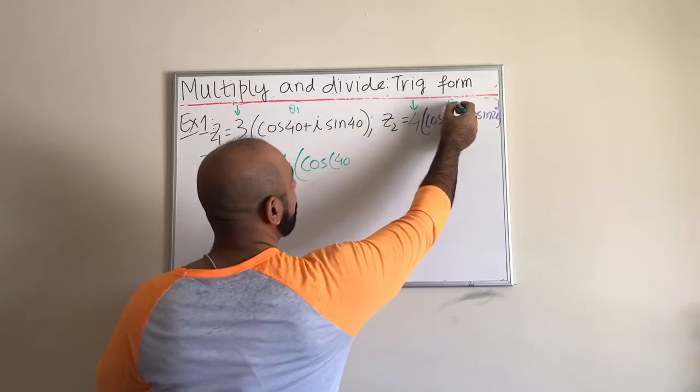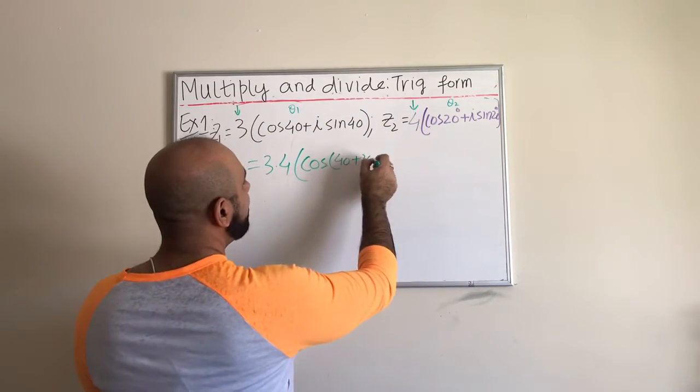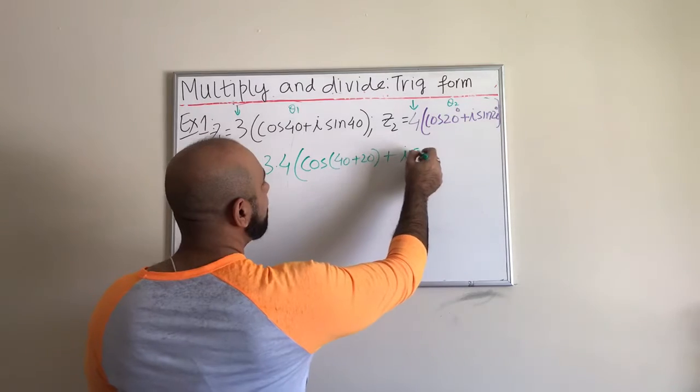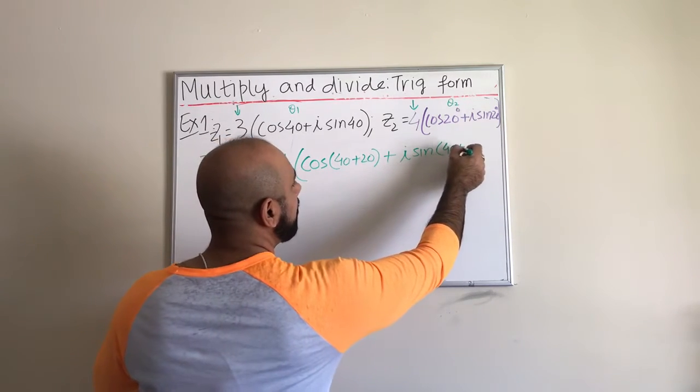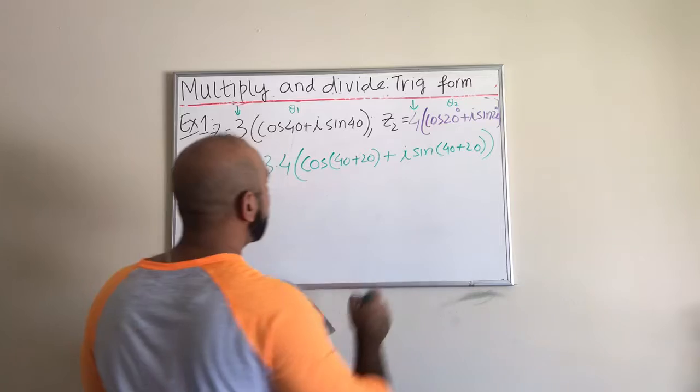So it is going to be 40 for this one. This is my theta 1 and this is my theta 2. So got the sum 40 plus 20 and then plus i times sine of the same thing, sine of the sum 40 plus 20. That's how we take the product of two complex numbers.